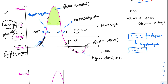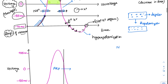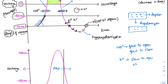The properties of sodium and potassium channels are important to remember. Sodium channels are fast to open and fast to close. Potassium channels are the opposite — slow to open and slow to close. This slow-to-close property of potassium channels is the reason why hyperpolarization, the downward potential below RMP, occurs.